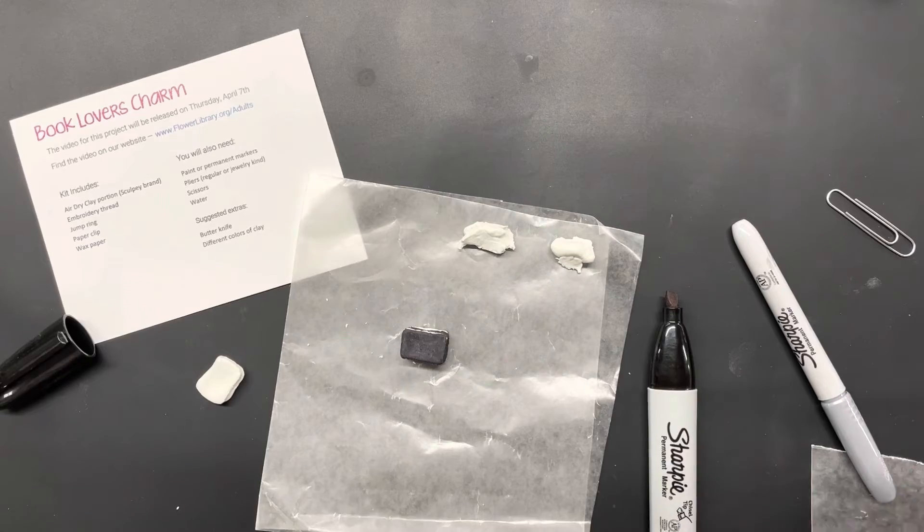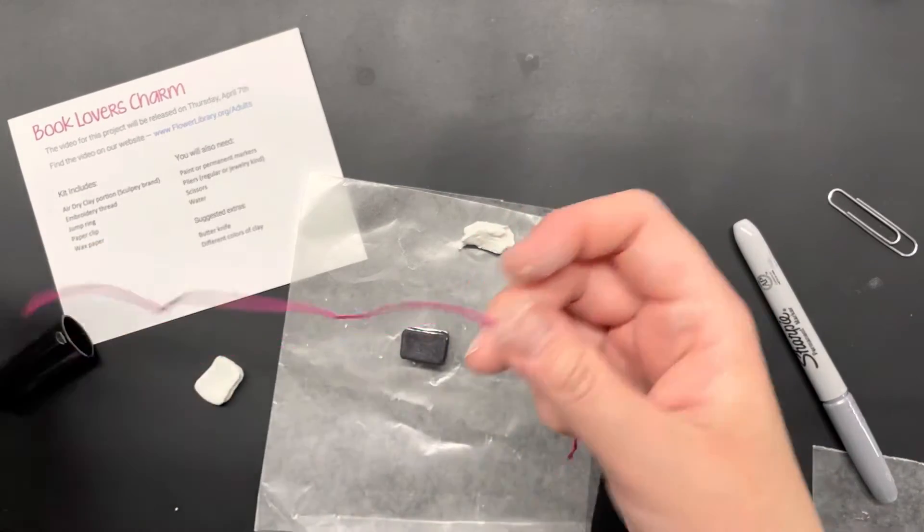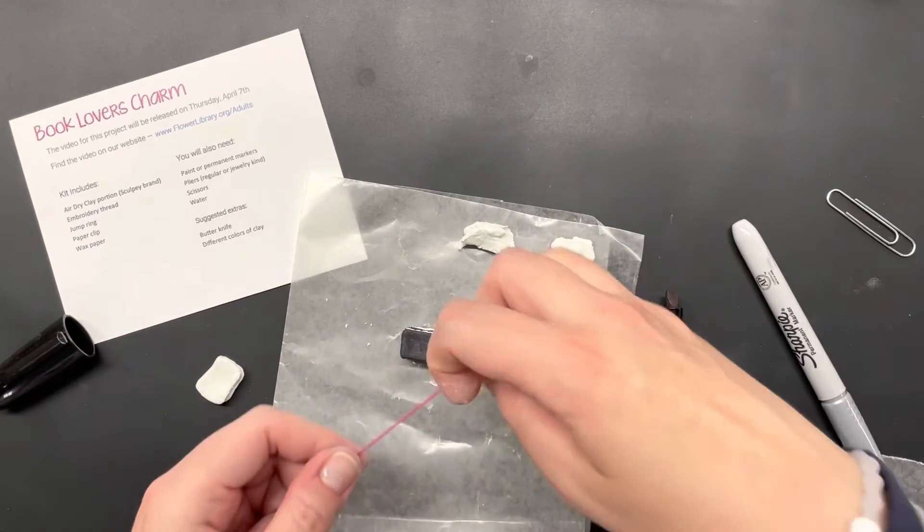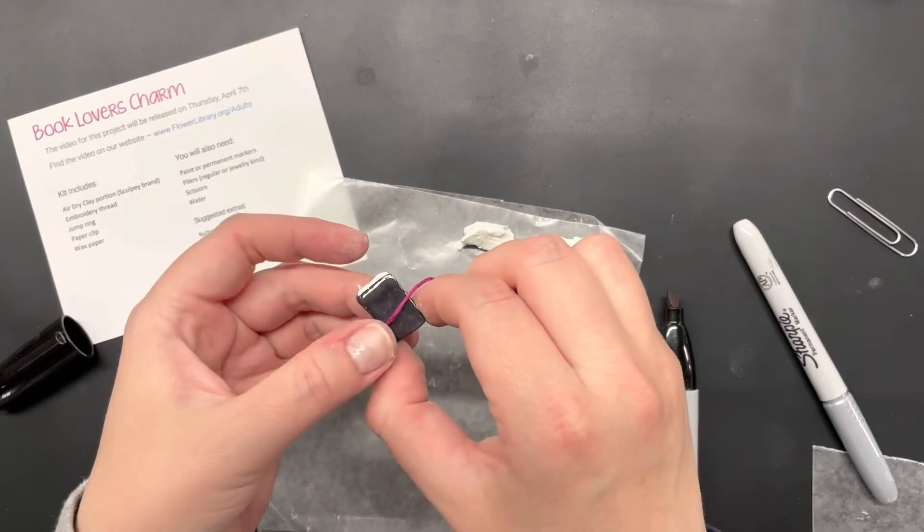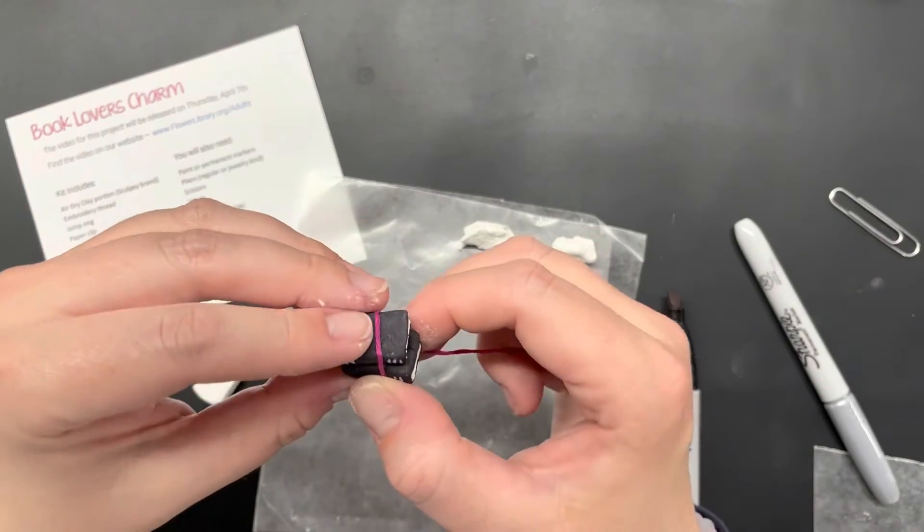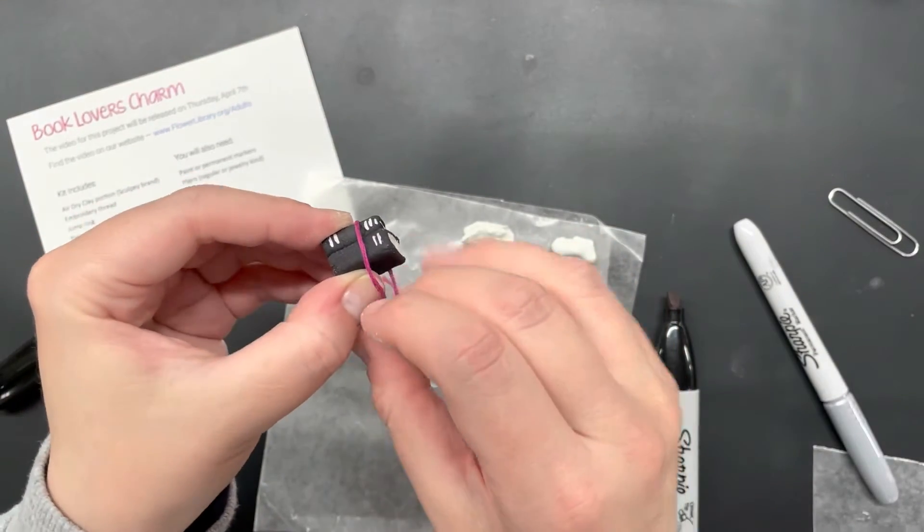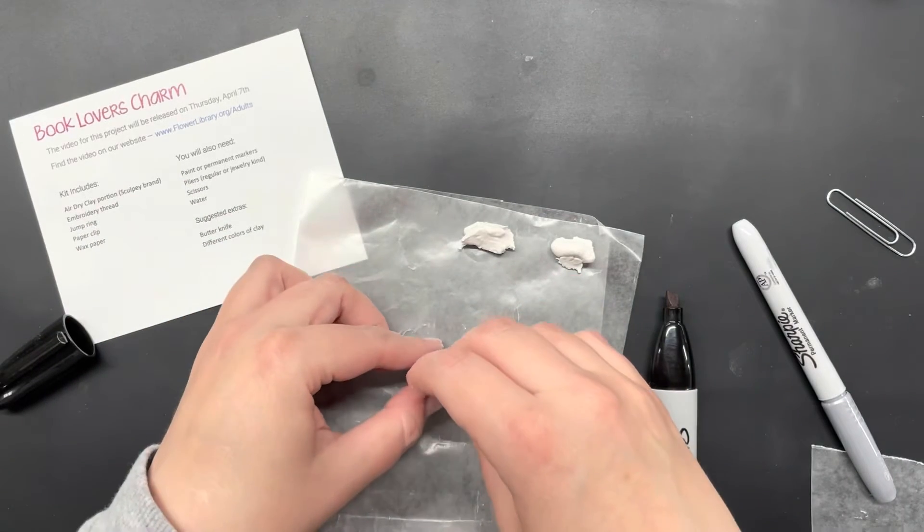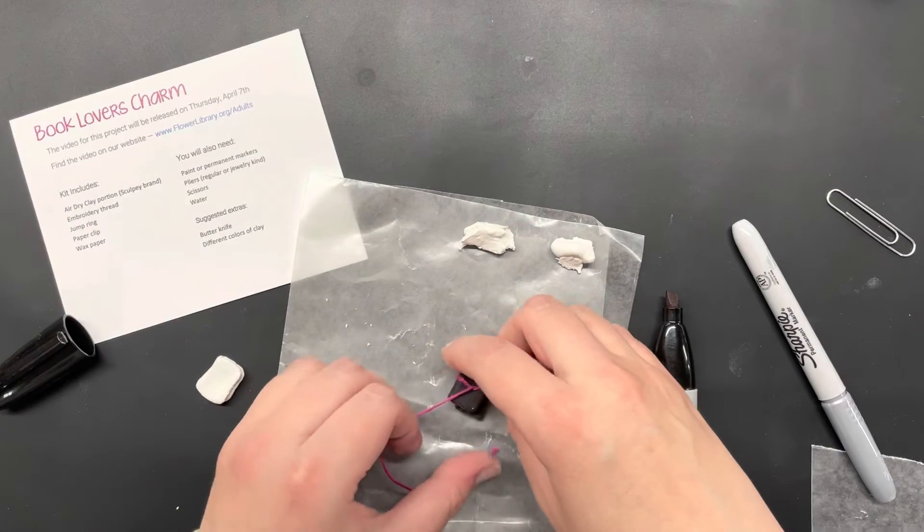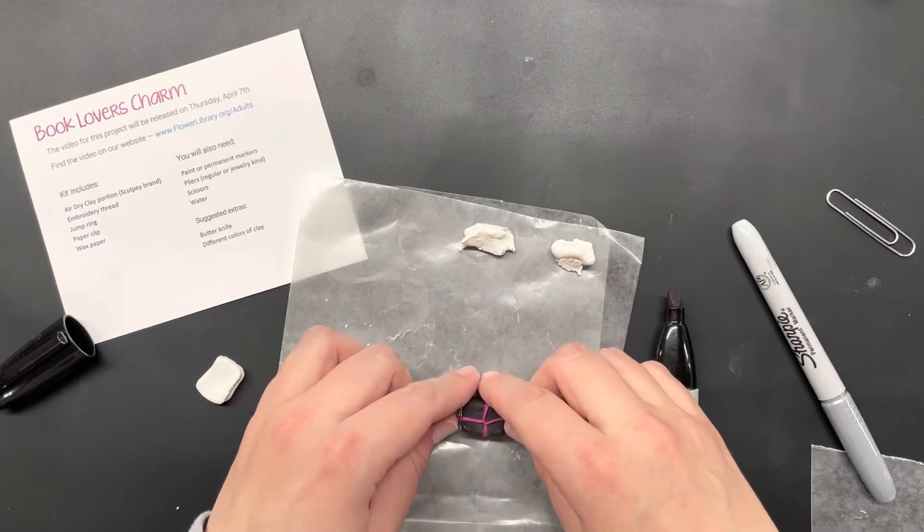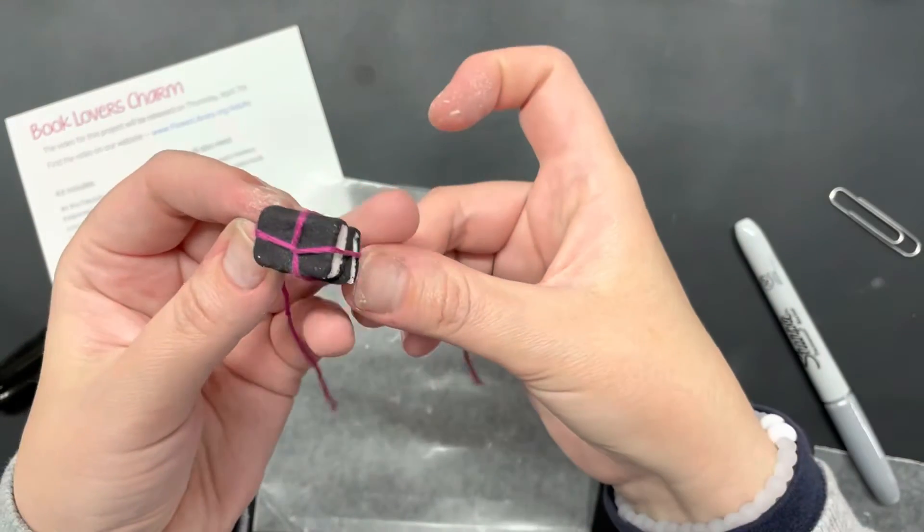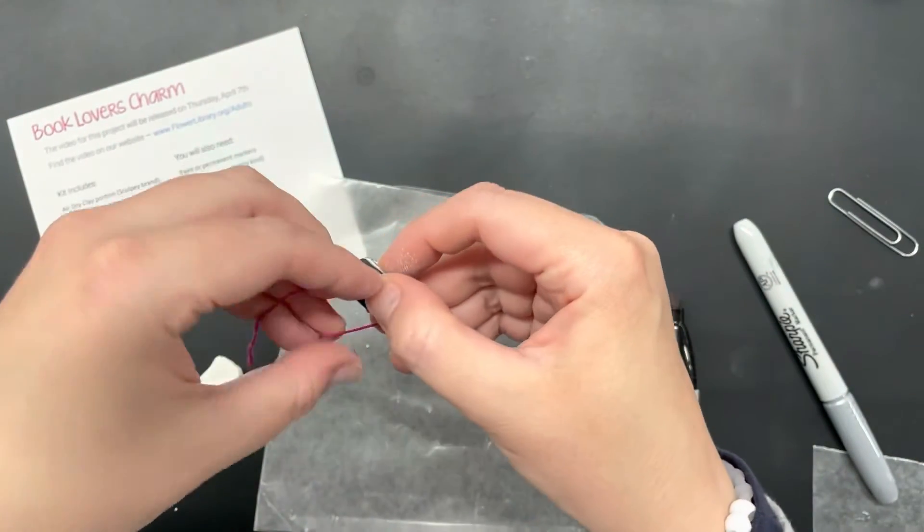So I have my two books. I have my piece of embroidery thread. And just think of it like you are wrapping a bow or a ribbon around presents. So I am just going to start with my thread across the top. Wrap it around to the bottom. Just give it a little twist and cross it.